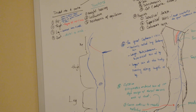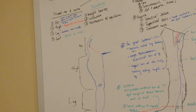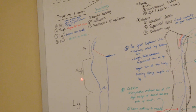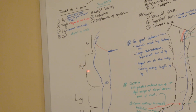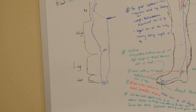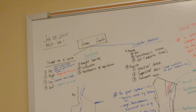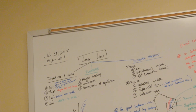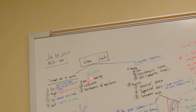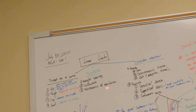As you can see here, the hip, the thigh, the leg, and the foot. The functions of the lower limb are weight bearing, locomotion, and maintenance of equilibrium.